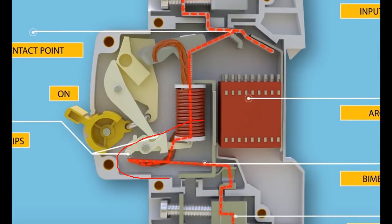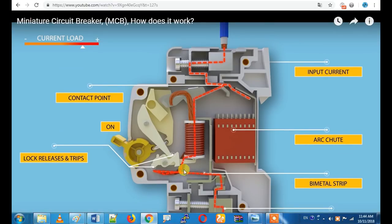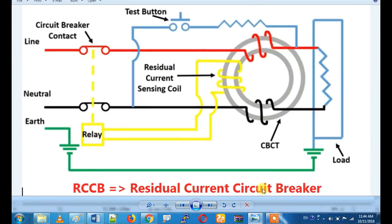The bimetallic strip is the third difference between RCCB and MCB. This is the working principle difference between RCCB and MCB.